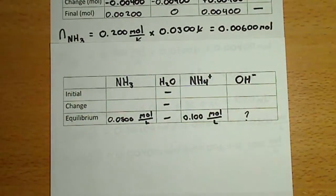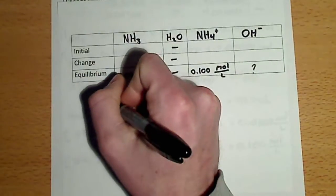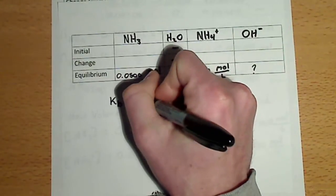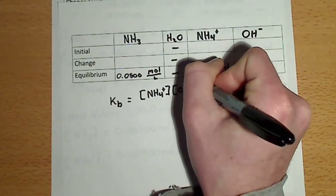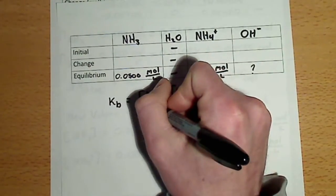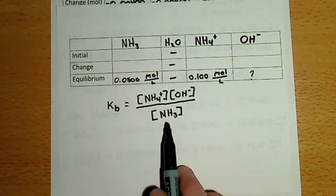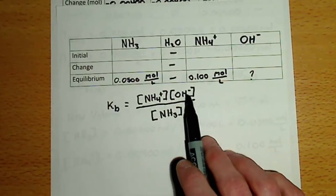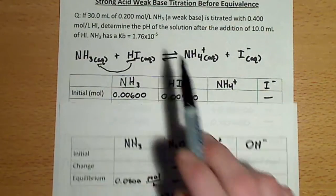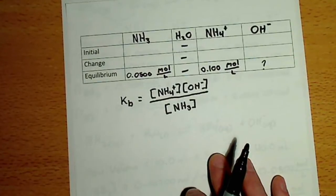Given that the only unknown is hydroxide, we can write the Kb expression and use the Kb value along with the two known concentrations to solve for the concentration of hydroxide. We have the concentration of ammonia, we have the concentration of ammonium, we do not know the concentration of hydroxide, and in the initial question we were given the value of Kb. So we have three of the four terms in our Kb expression — let's go ahead and solve for the concentration of hydroxide.